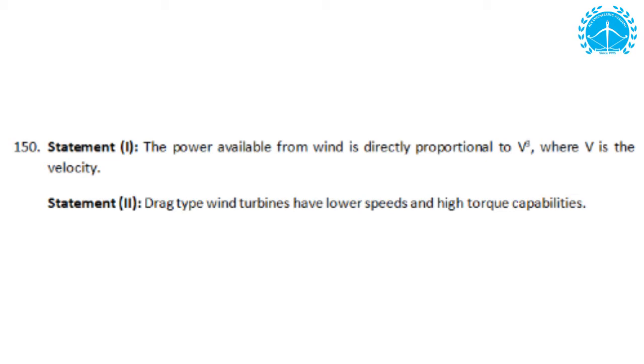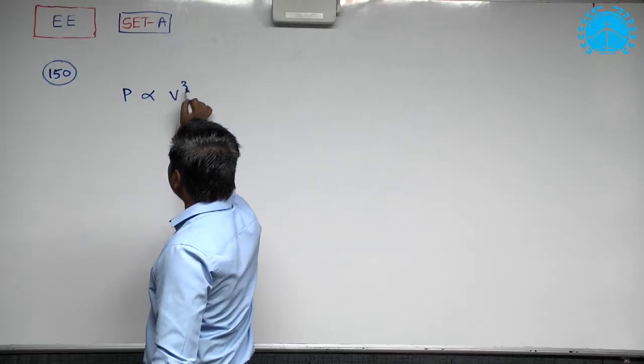The power available from the wind turbine is directly proportional to velocity cube. That was true, power available is proportional to velocity cube.